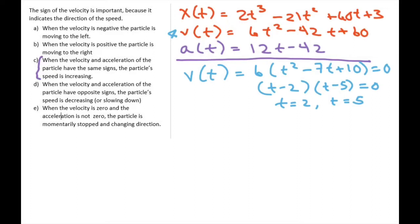So now again, we starting with t is positive. So the intervals we want to pick are from 0 to 2 and then from 2 to 5 and then for t greater than 5.